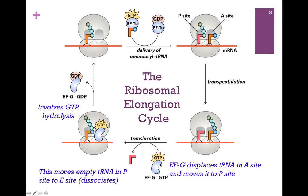EFG is also a G protein, so it's bound to GTP. It will come in, and because it resembles very closely EFTU bound to the tRNA, it fits very nicely in that A site and moves the ribosome — ratchets it essentially. That moves the tRNA with the polypeptide chain bound from the A site to the P site. What's not illustrated here is that the empty tRNA moves to the E site and eventually dissociates. The next thing that occurs is GTP hydrolysis by EFG, and that releases that elongation factor. Now we're ready to begin another cycle. Another tRNA is brought in by EFTU, and we're ready to add the next amino acid. This is how the elongation cycle continues — EFTU delivering the correct tRNA to the A site and EFG carrying out translocation.